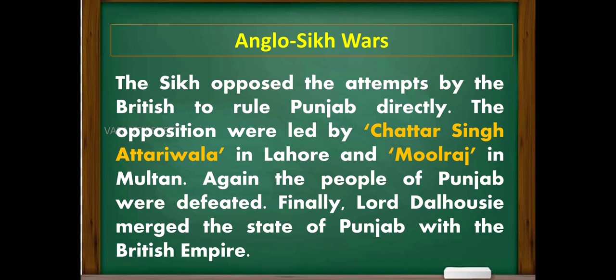The Sikhs opposed the British attempts to rule Punjab directly. The opposition was led by Chattar Singh Attariwala in Lahore and Mulraj in Multan. Again the people of Punjab were defeated, and finally Lord Dalhousie merged the state of Punjab with the British Empire.